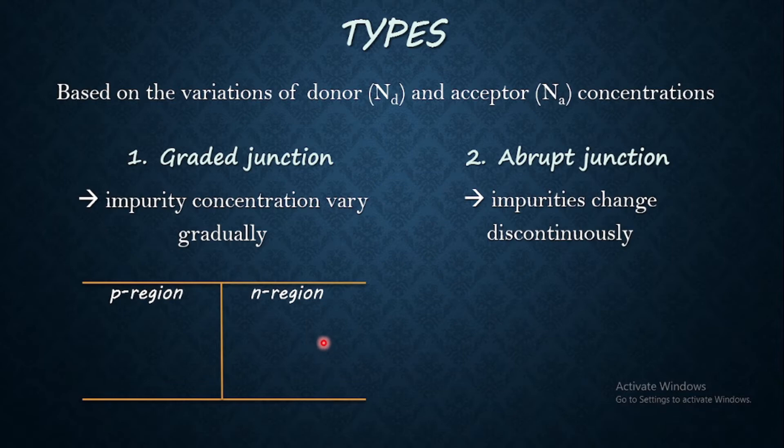That's why N region will contain donors whereas P region will contain acceptors. And if we consider graded junction, then the concentration of acceptors is going to decrease gradually as it approaches the junction. That is the interface. And if we consider N side, then the donor impurities are going to decrease gradually near to the junction. So this is how the change in impurity concentration will take place across the junction.